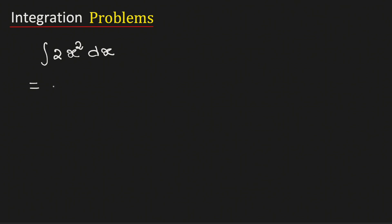See that 2 is a constant, so we can write it out of the integration. Therefore, the given integral can be written as 2 times integration of x square.